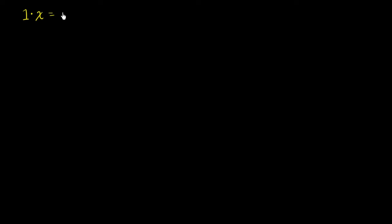When you first learned multiplication many years ago, you got exposed to the idea that one times some number is equal to that number again. And that makes intuitive sense — you're literally saying one of this thing is just going to be that thing. You can view it as: when thinking about regular multiplication or scalar multiplication, it has this identity property.